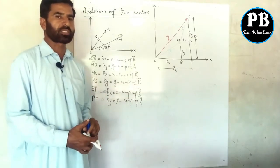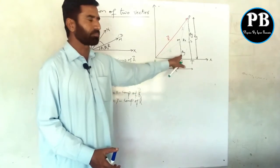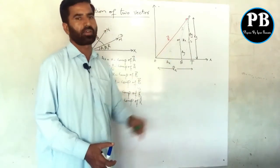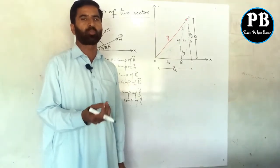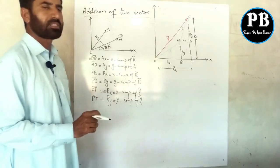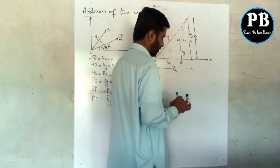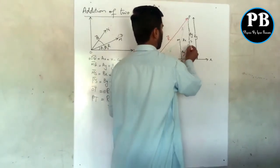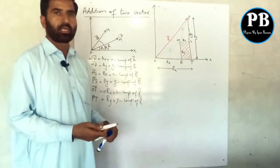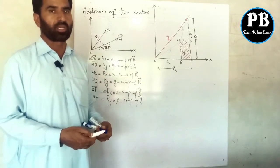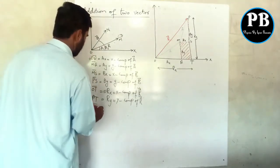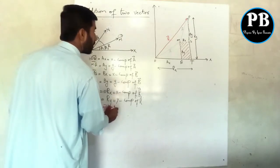All three vectors are resolved into two components: A is resolved into Ax and Ay, B is resolved into Bx and By, and R is resolved into Rx and Ry. Here there is a similarity — this picture which we have drawn is in the geometrical shape of a rectangle. We know that opposite sides of a rectangle are equal. Here QT is equal to MS, and both are equal to Bx.